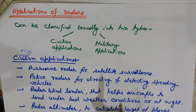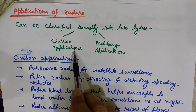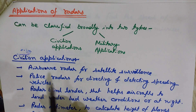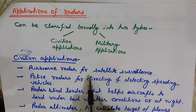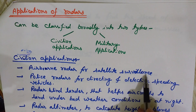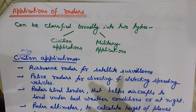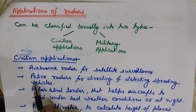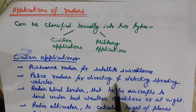Now we will see some applications of radars. These can be broadly classified into two types: civilian applications and military applications. For civilian applications, first is airborne radar for satellite surveillance — we can use radar to keep an eye on satellites, monitoring where and how they are moving, their speeds, and their locations.